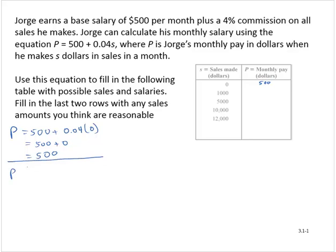If he makes $1,000 in sales, p would be 500 plus 0.04 times 1,000. And 4% of 1,000 is 40. And so that would be 540.